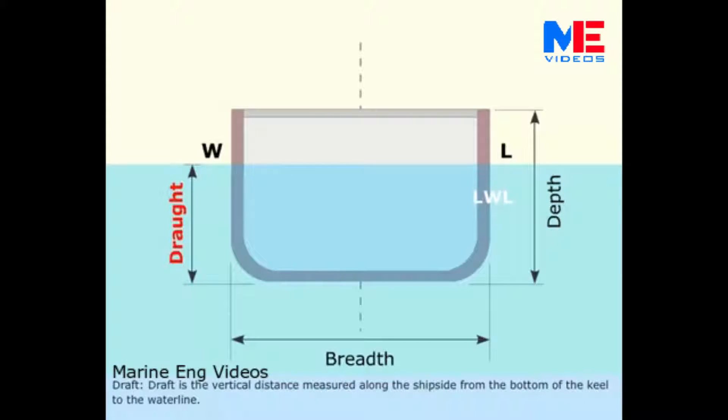Draft. Draft is the vertical distance measured along the shipside from the bottom of the keel to the waterline. Molded draft is the vertical distance measured at midship along the shipside from the bottom of the keel to the upper edge of the summer loadline.